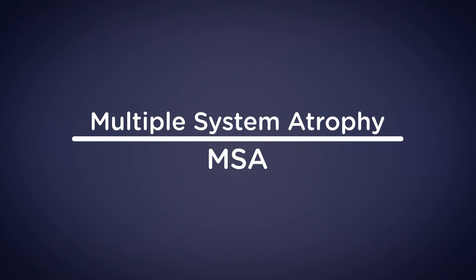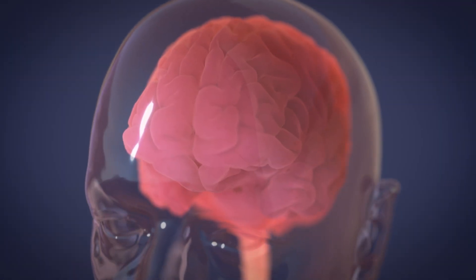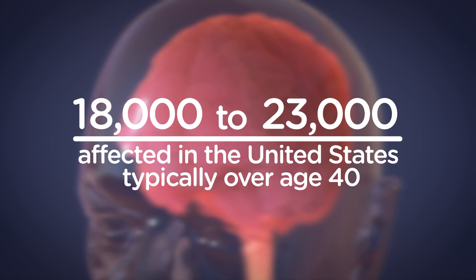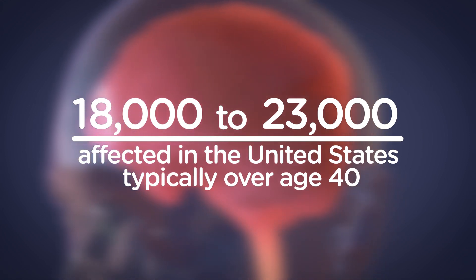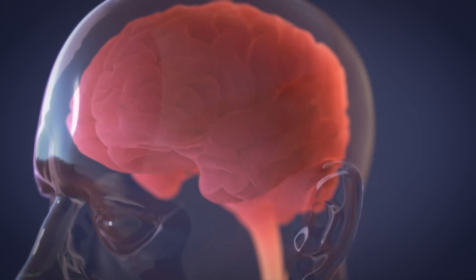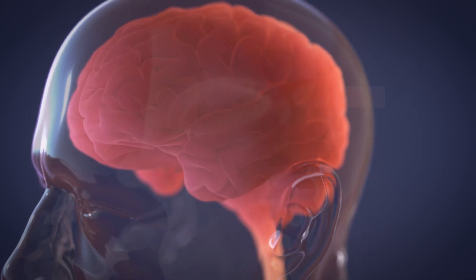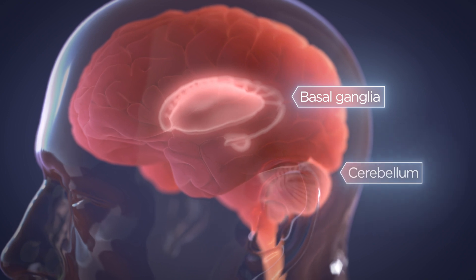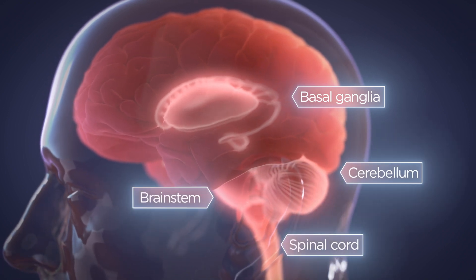Multiple system atrophy, or MSA, is a rare, progressive neurodegenerative disorder that affects approximately 18,000 to 23,000 people in the U.S., typically over the age of 40. This disease primarily targets the neurons in the basal ganglia, cerebellum, brainstem, and spinal cord.